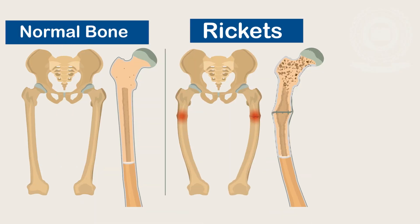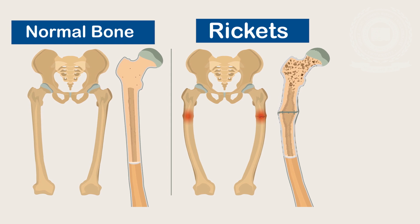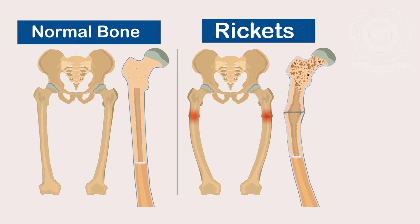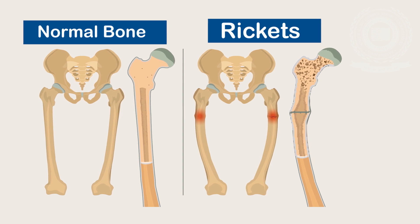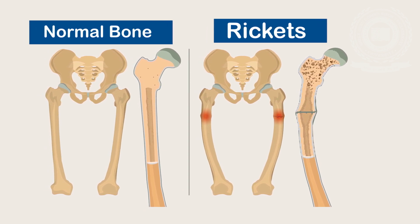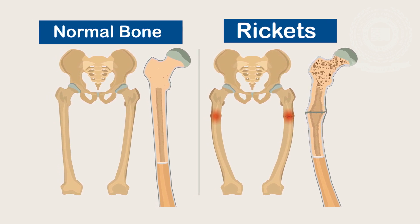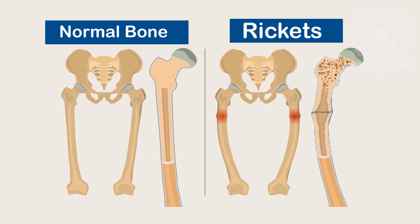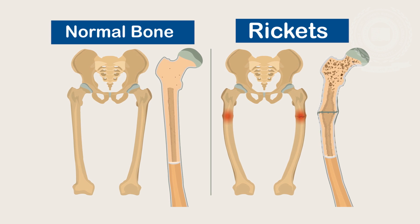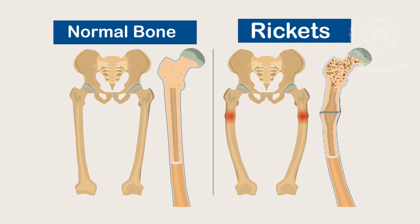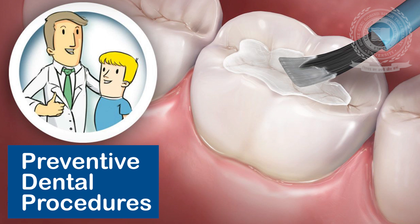Rickets arises from defects in factors that regulate mineral ion homeostasis. It manifests clinically as widening of the distal long bones, often evident at the wrist, knees, ankles, and ribs. All developing permanent teeth, especially the first molar, show large pulp chambers, short roots, poorly defined lamina dura, and hyperplastic alveolar ridges. Preventive dental procedures like topical fluoride application and pit and fissure sealants should be carried out to eliminate caries and prevent the occurrence of multiple periapical abscesses, along with close follow-up.